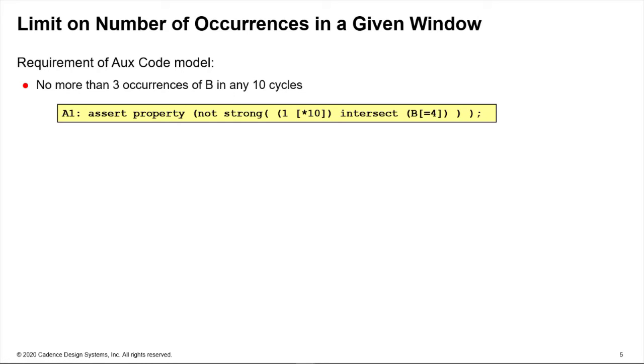So this is a general solution to these kinds of things. So if your requirement was I shouldn't have three occurrences of B in any 10 cycle window, we could do it like this.